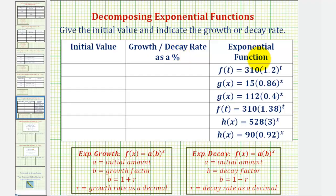To begin, let's identify which functions are exponential growth and which are exponential decay. For exponential growth in this form, the base B is called the growth factor, which is equal to one plus R, where R is the growth rate as a decimal. Because B equals one plus R, the base is always greater than one, and therefore we have an increasing function.